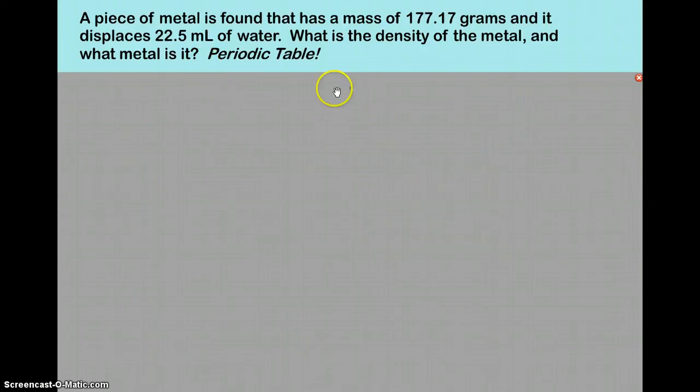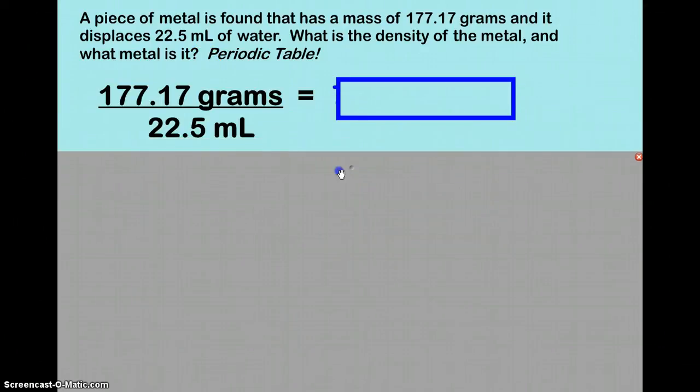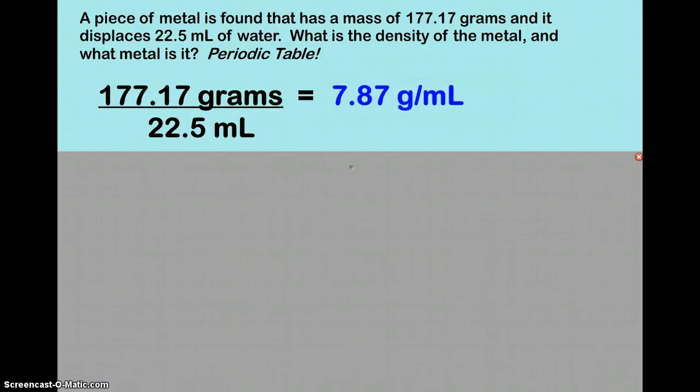So we just have to take the mass of 177.17 grams, and we divide that by 22.5 milliliters, and we get 7.87 grams per milliliter. That's our density unit when water displacement is used to find the volume. If we measure and calculate the volume, our density would be grams per centimeter cubed.